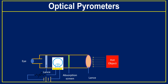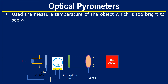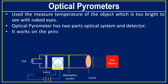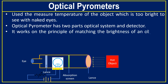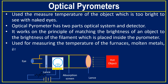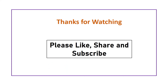Optical pyrometers are used to measure the temperature of objects that are too bright to see with the naked eye. The optical pyrometer has two parts: an optical system and a detector. It works on the principle of matching the brightness of the object to the brightness of a filament placed inside the pyrometer. The optical pyrometer is used for measuring the temperature of furnaces, molten metals, and other overheated materials or liquids.